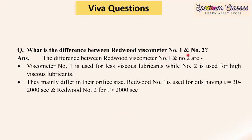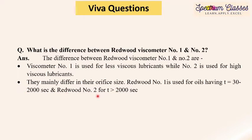The next question: what is the difference between Redwood Viscometer Number One and Number Two? They mainly differ in their orifice size — the nozzle at the bottom of the cylindrical vessel. Viscometer Number One is used for less viscous lubricating oils while Number Two is used for highly viscous oils; hence Number One has a smaller orifice and Number Two has a bigger one. Oils that require 30 to 2000 seconds to flow use Number One, while oils requiring more than 2000 seconds use Number Two.